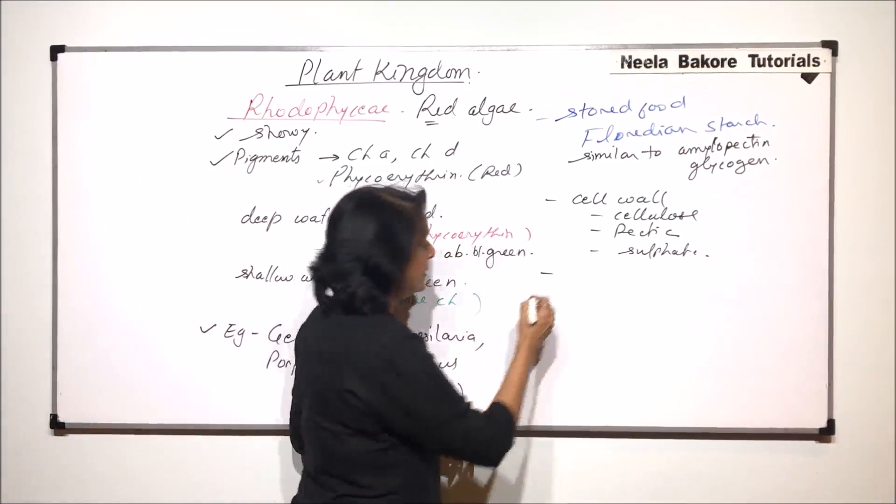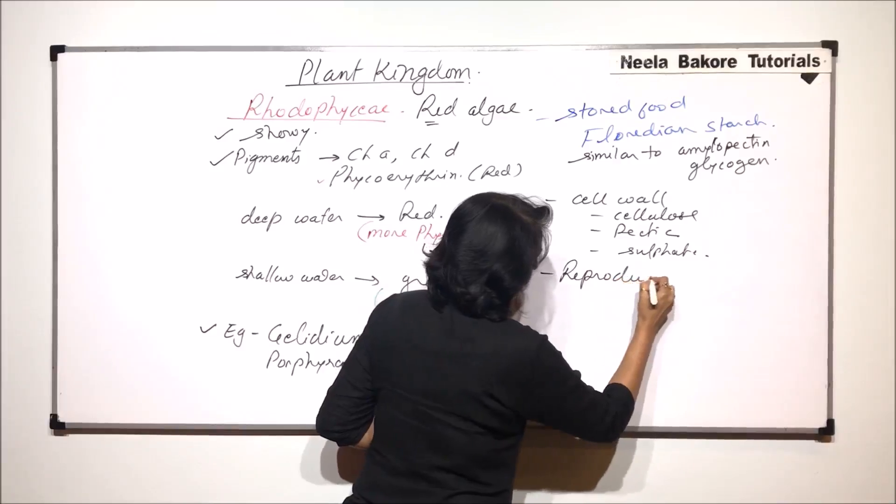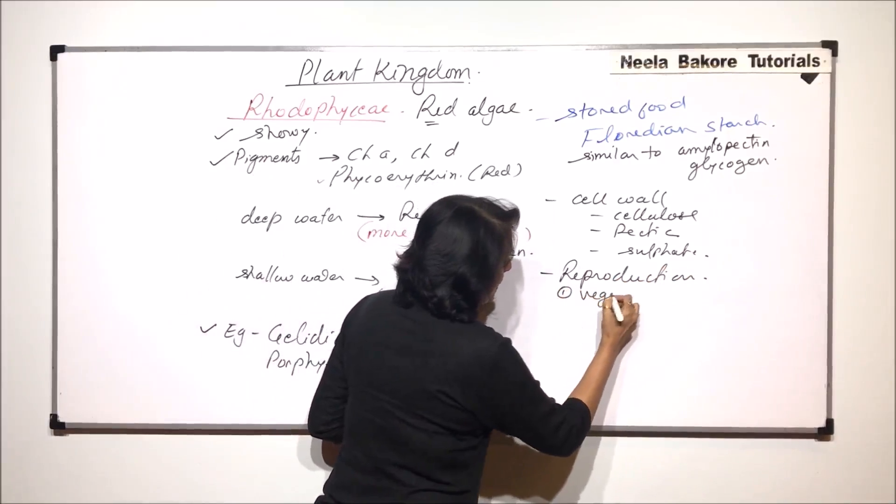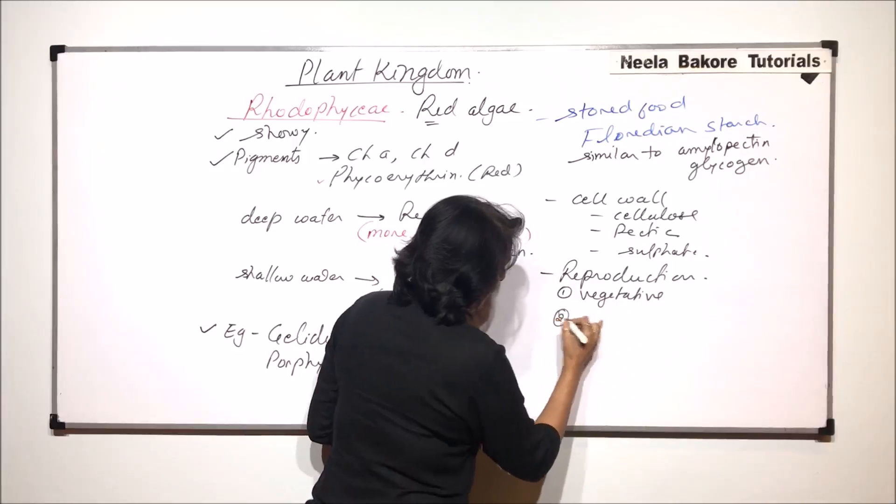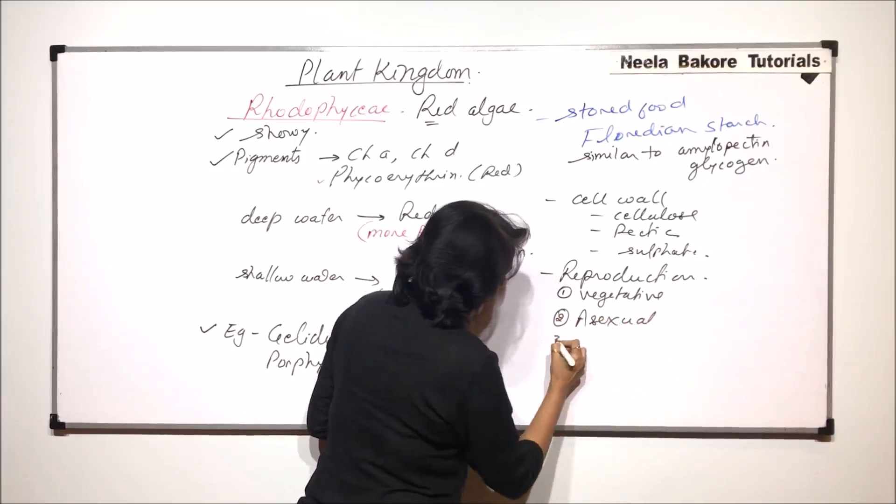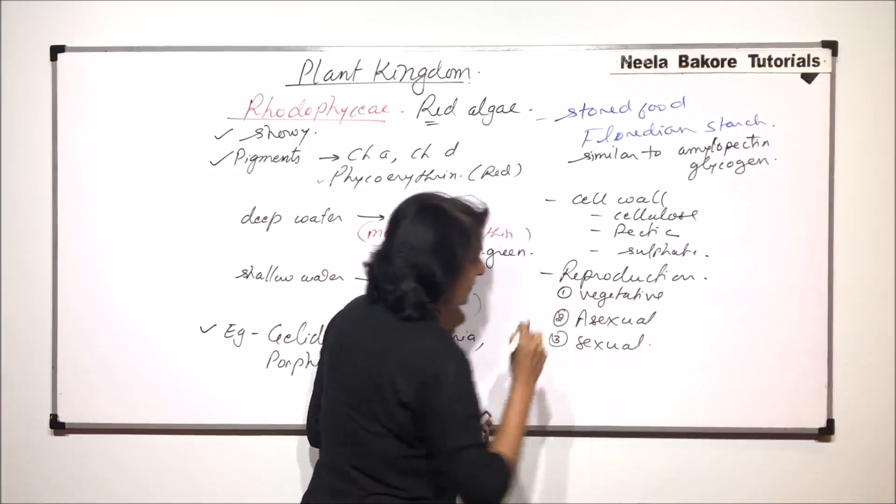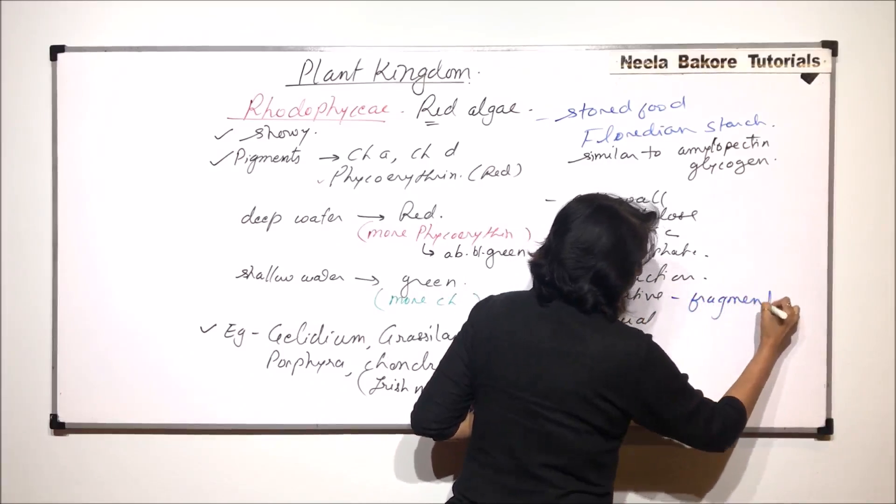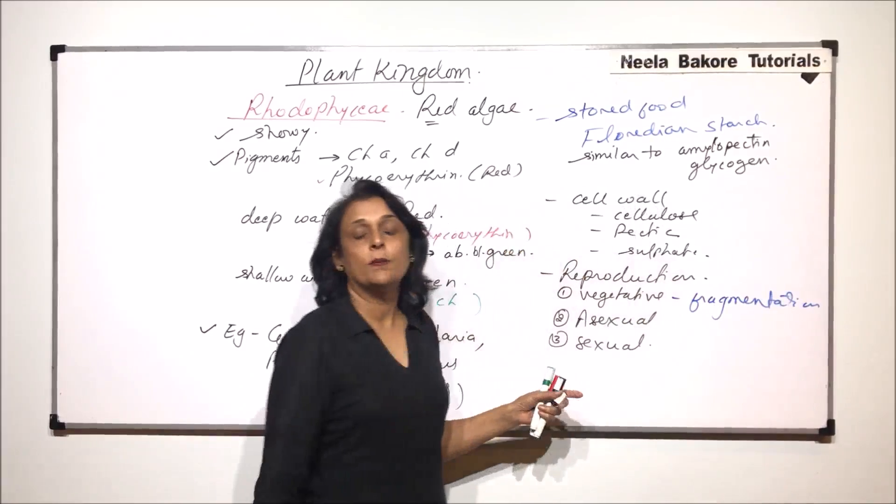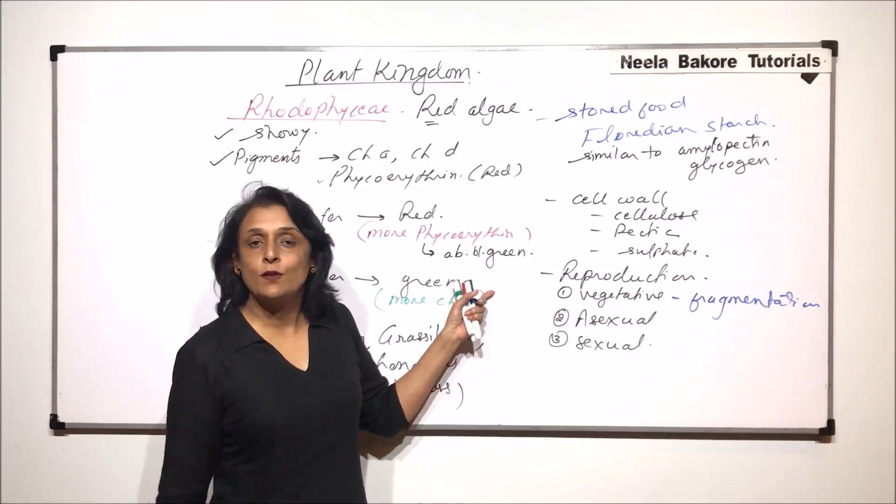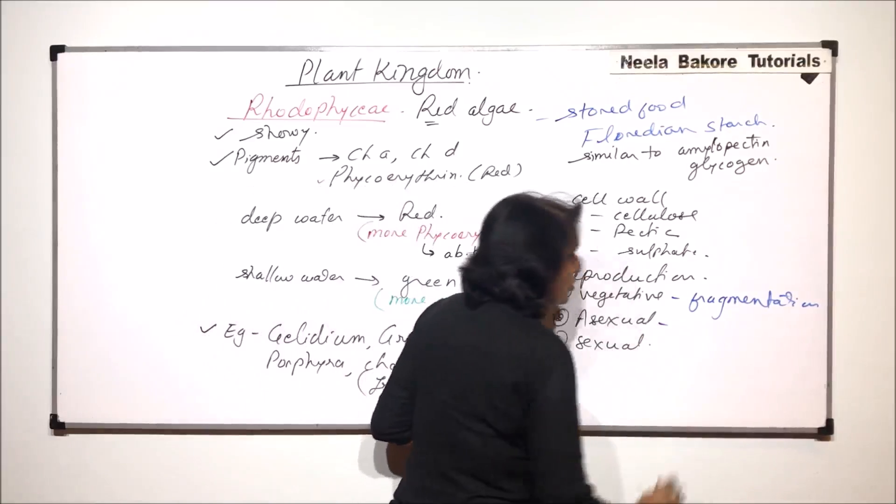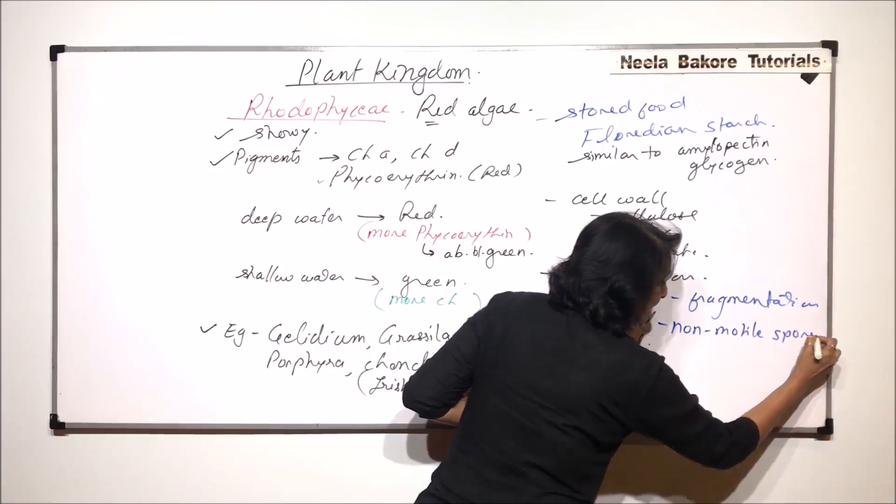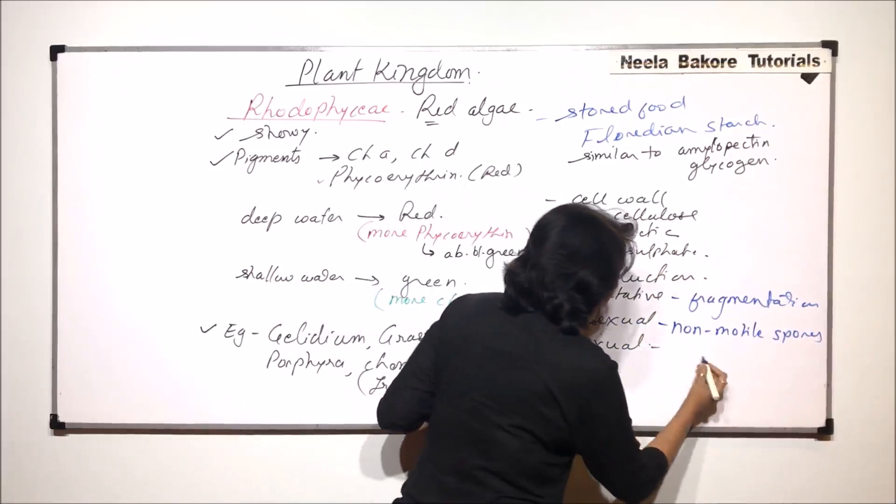Let us take another important thing that is reproduction. In case of red algae, reproduction is again by three methods. One is vegetative, then asexual and third is sexual reproduction. Vegetative reproduction takes place by fragmentation. That means the main body or the main plant breaks into parts or pieces and each part is capable of giving rise to new plant.